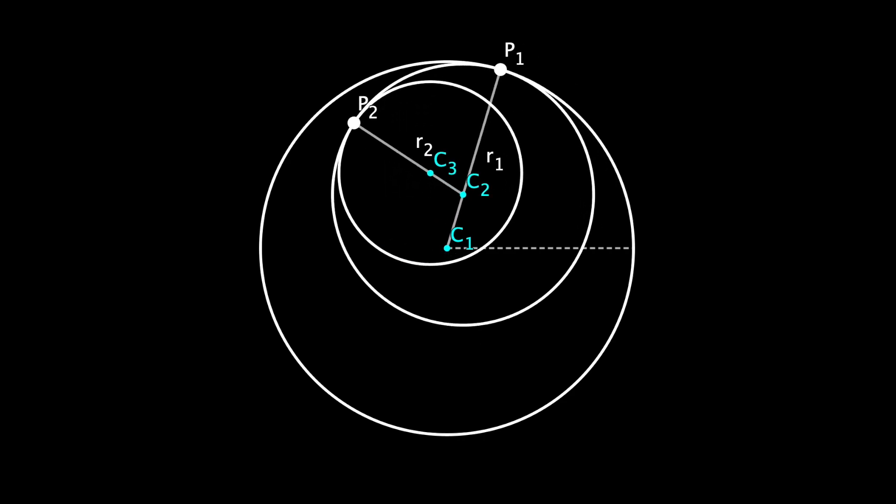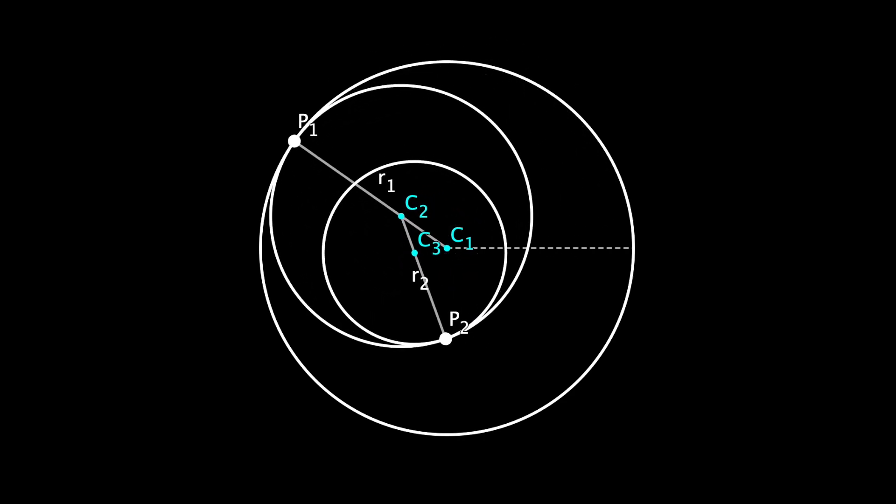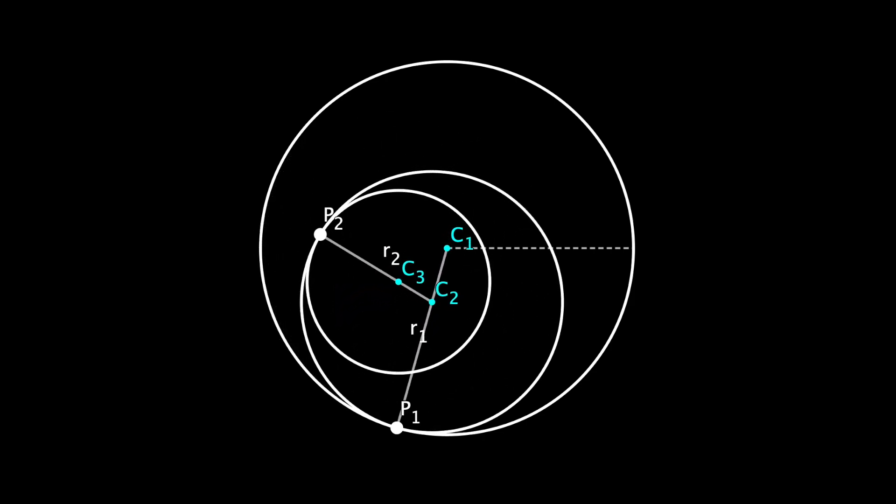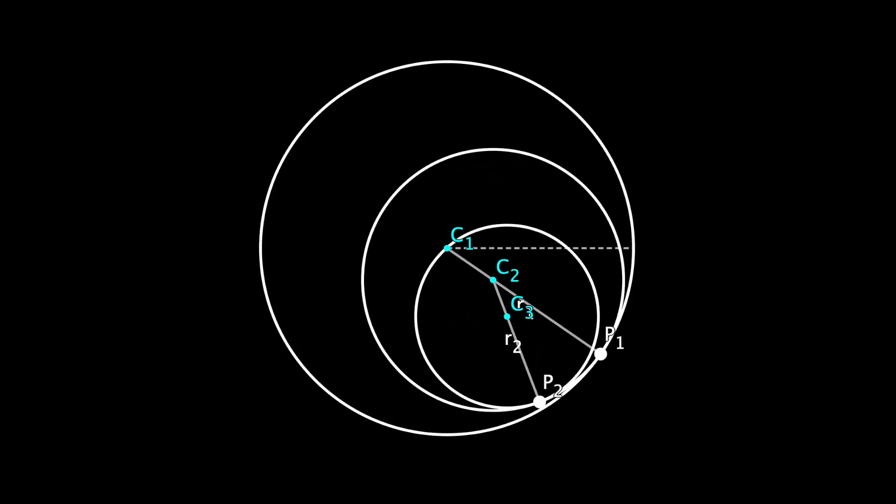We also need to define the movement of p2. In this case, p2 revolves at twice the speed of p1, as you can see here.